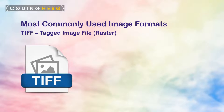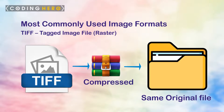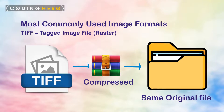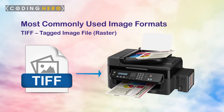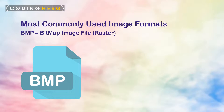TIFF, or Tagged Image File, is a raster format. A TIFF is a larger raster file that doesn't lose quality. This file type is known for using lossless compression, meaning the original image data is maintained regardless of how often you might copy, resave, or compress the original file. TIFF files are also commonly used when saving photographs for print.